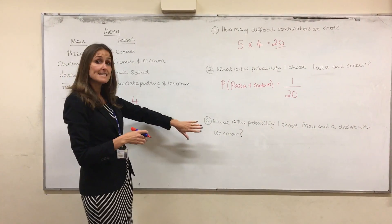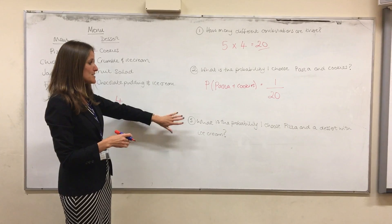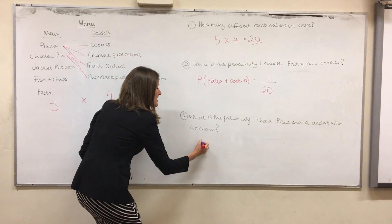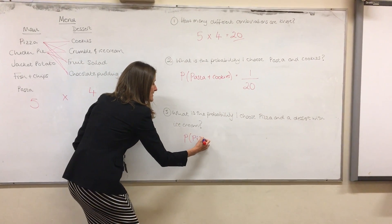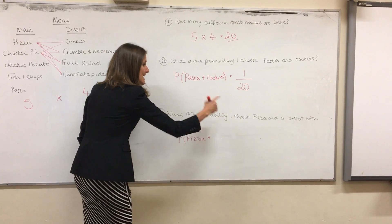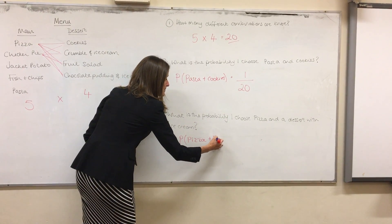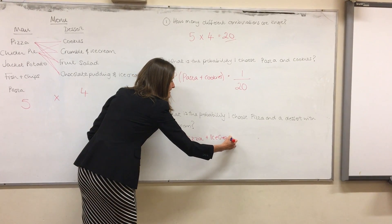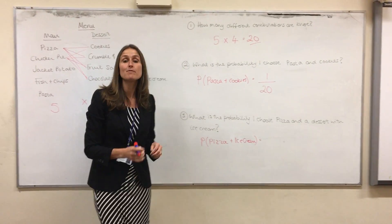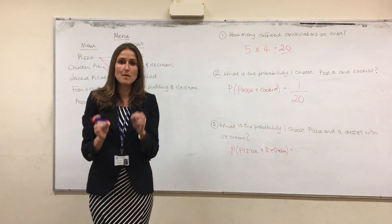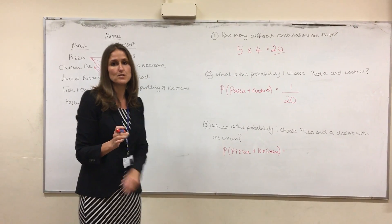The last part is similar. The last part says: what is the probability that I choose a pizza and a dessert that includes ice cream? Okay, same as before, your numerator has to be the number of ways that that can be fulfilled.